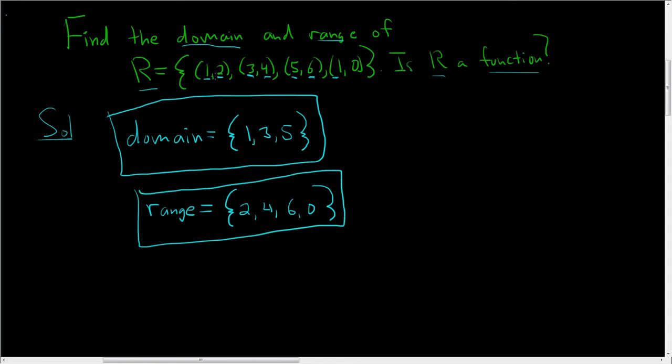So again, to find the domain, you just take the first components: 1, 3, 5. You already included 1, so you only have to write it once. To find the range, you take the second components: 2, 4, 6, 0.